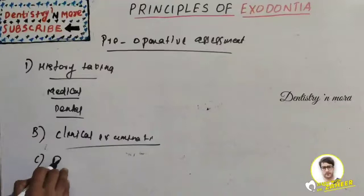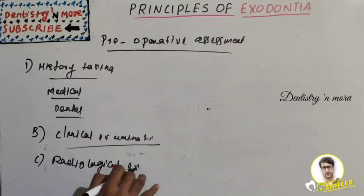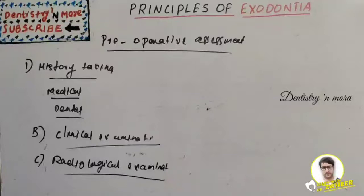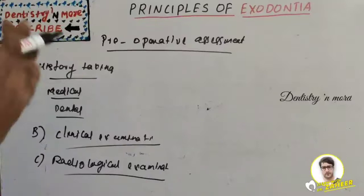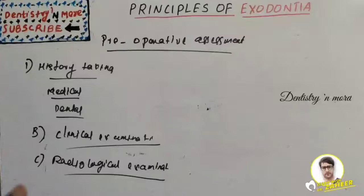After clinical examination, we go for radiological examination. We need to assess vital structures related to the extraction site — most commonly the maxillary sinus for upper posterior teeth, and the inferior alveolar nerve for lower molars. Root configuration must be checked to ensure there is no dilaceration or divergence, which might cause root breakage. We should also look for ankylosis, hypercementosis, periapical radiolucency, and contusion of the jaw bones.